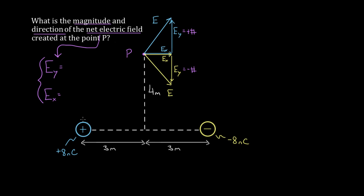The field created by the positive charge is just as upward as the field created by the negative charge is downward. So when you add up these two vertical components to find the vertical component of the net electric field, you're just gonna get zero. They cancel completely, which means we only have to worry about the horizontal components.